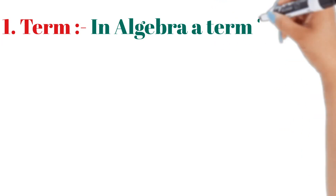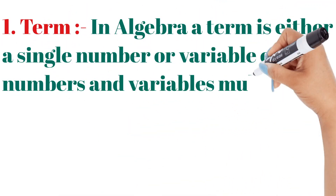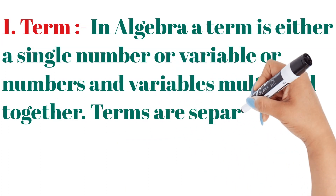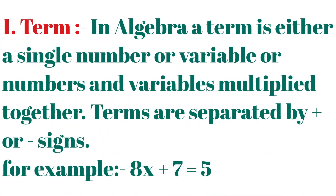Now, term. In algebra, a term is either a single number or variable, or numbers and variables multiplied together. Terms are separated by a plus or minus sign. For example, in 8x + 7 = 5, here 8x, 7, and 5 are your terms.